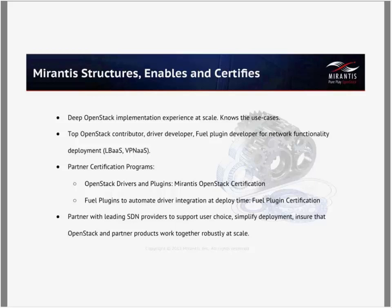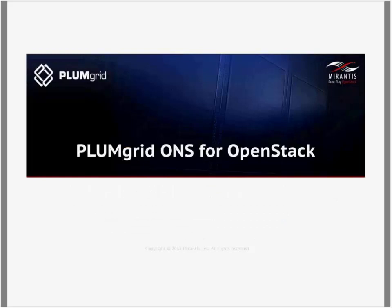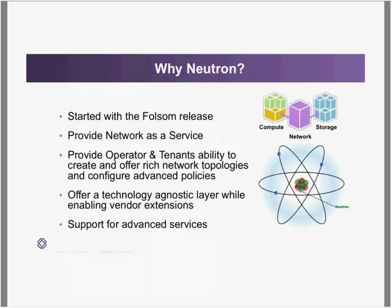Thank you, John. We're going to switch gears and start diving a little deeper into OpenStack networking, and then I'll tell you what PlumGrid does for OpenStack networking. Adding to what John was describing, the network component for OpenStack is called Neutron, and this was introduced a few releases back to really enable both cloud providers and end-user tenants to self-provision rich network services. Before Neutron, networking was kind of built into Nova, the compute component of OpenStack. Neutron is the component that brings rich network topologies, the ability to configure security policies, interconnect with the external world, and provide isolated environments.